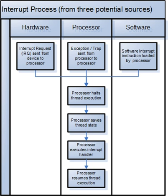An interrupt that leaves the machine in a well-defined state is called a precise interrupt. Such an interrupt has four properties: the program counter is saved in a known place; all instructions before the one pointed to by the PC have fully executed; no instruction beyond the one pointed to by the PC has been executed, or any such instructions are undone before handling the interrupt; and the execution state of the instruction pointed to by the PC is known. An interrupt that does not meet these requirements is called an imprecise interrupt.